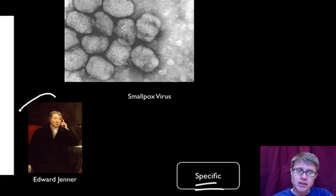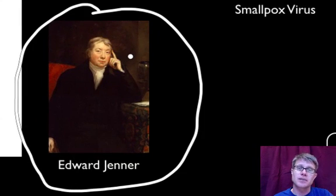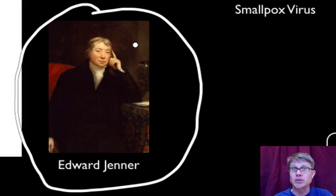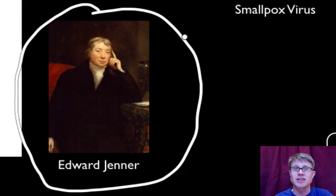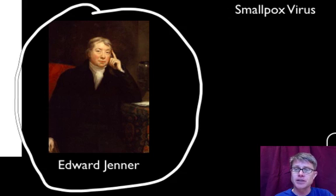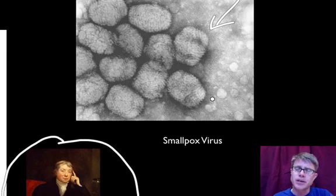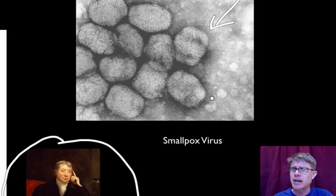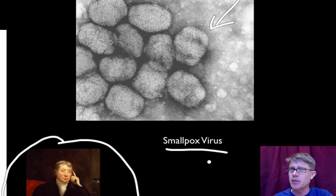Edward Jenner is a great example of immune response. Back in the day the number of people being killed by smallpox was unbelievable — millions of people were being infected. What Jenner noticed is that milkmaids who were picking up a disease called cowpox — cowpox forms on the udders of a cow but was also transferred to these women — were given an immunity to smallpox. In other words, by picking up cowpox you couldn't get smallpox as well.